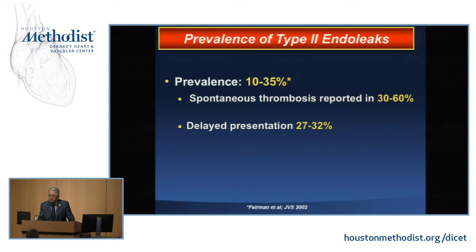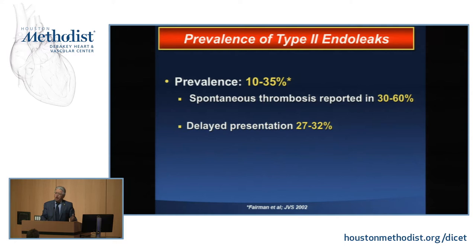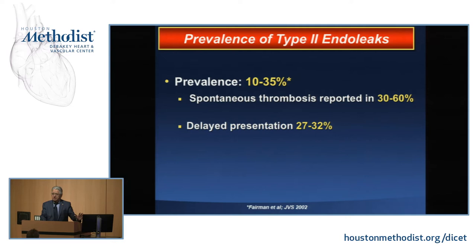When open surgery is done for abdominal aortic aneurysm repair, the surgeon has direct vision and can ligate the lumbar arteries to prevent backflow. As interventionalists — whether surgeon, cardiologist, or radiologist — we don't have that luxury. Those vessels might not be visible, and you hope they will disappear over time. Nothing has been convincingly resolved regarding type 2 endoleak until the present time.